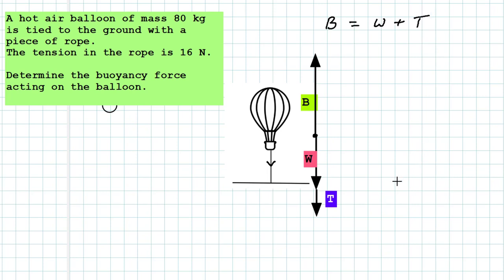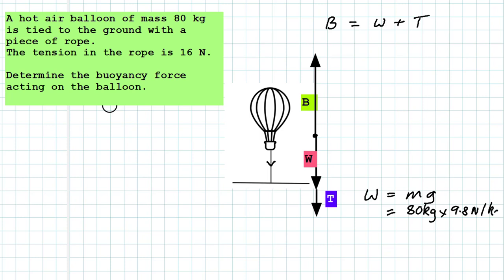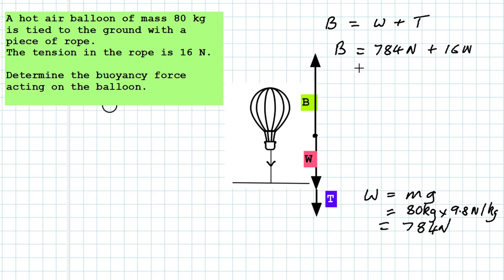How do we calculate the weight? The weight is equal to the mass times the gravitational field strength, which we take to be 9.8 newtons per kilogram on the surface of the earth. The mass of the balloon is 80 kilograms multiplied by 9.8 newtons per kilogram, giving us 784 newtons. So the buoyancy force B equals the weight of 784 newtons plus the tension force of 16 newtons, giving a total of 800 newtons.